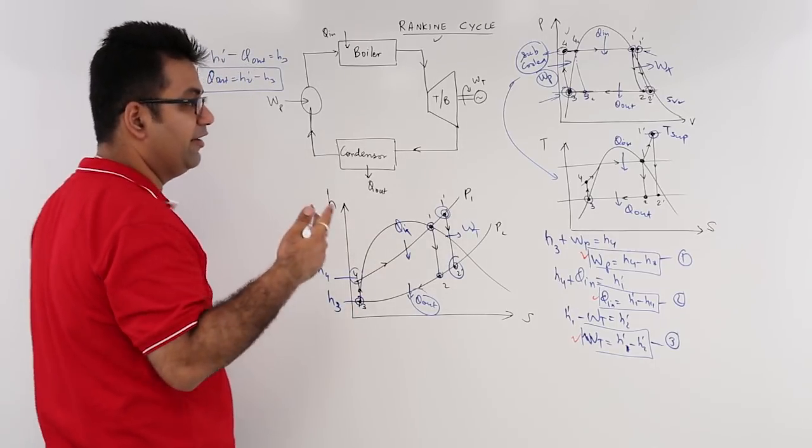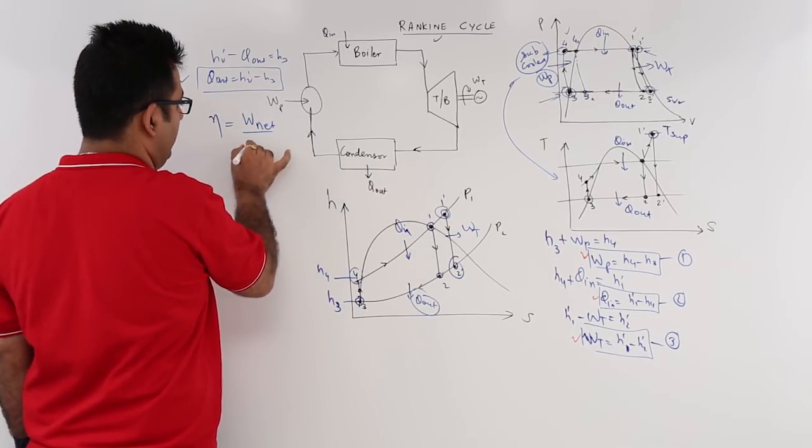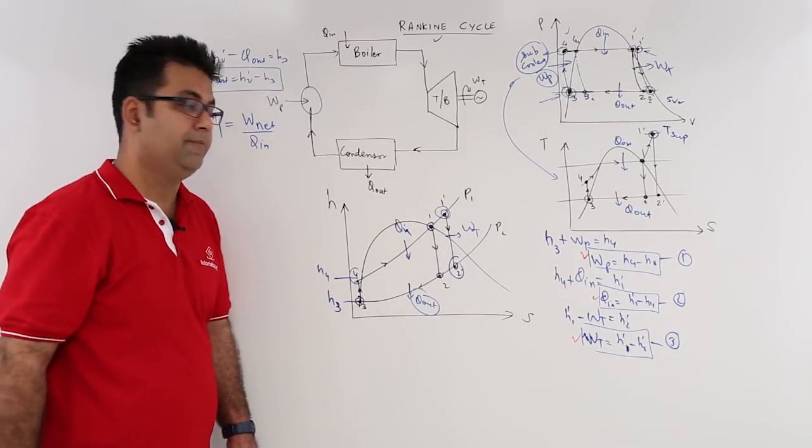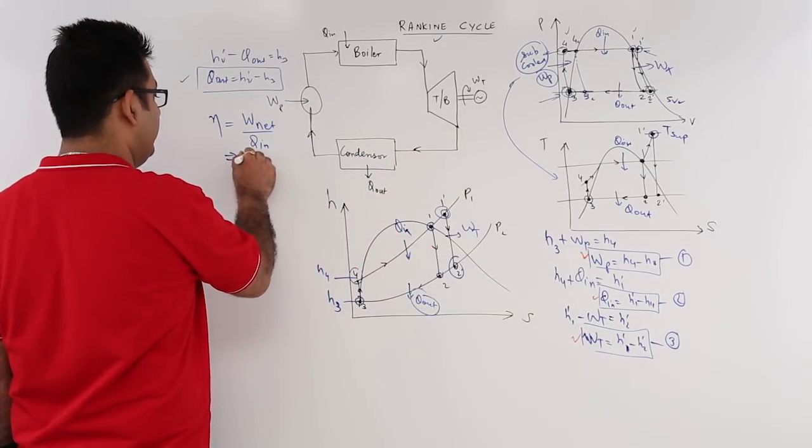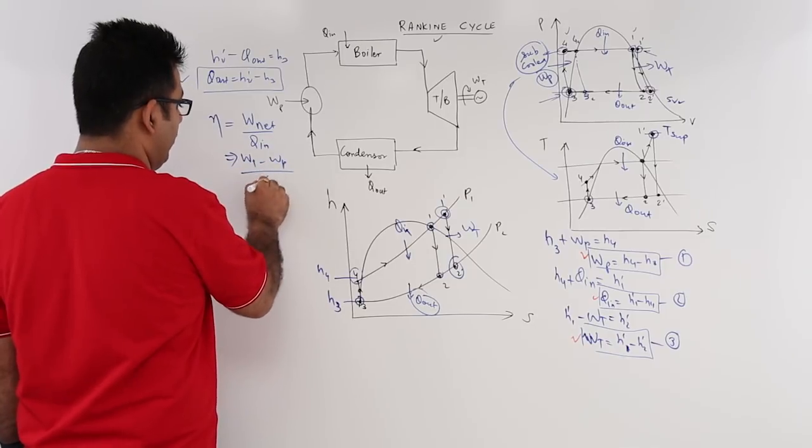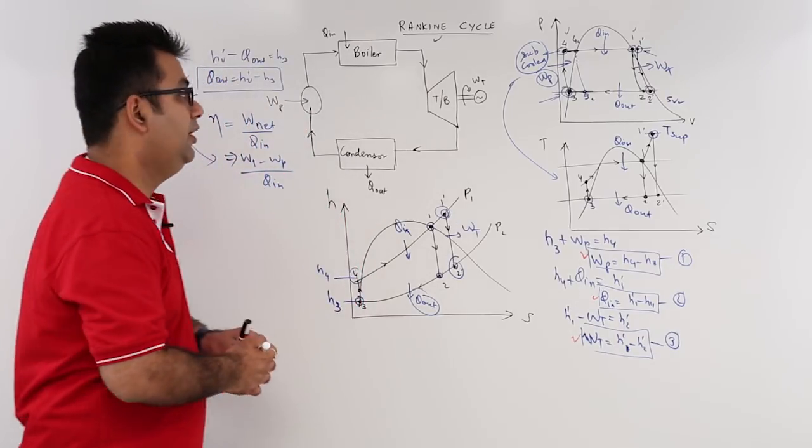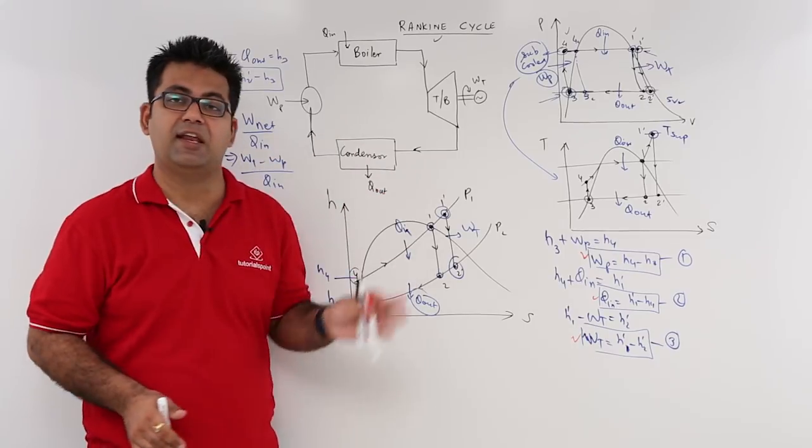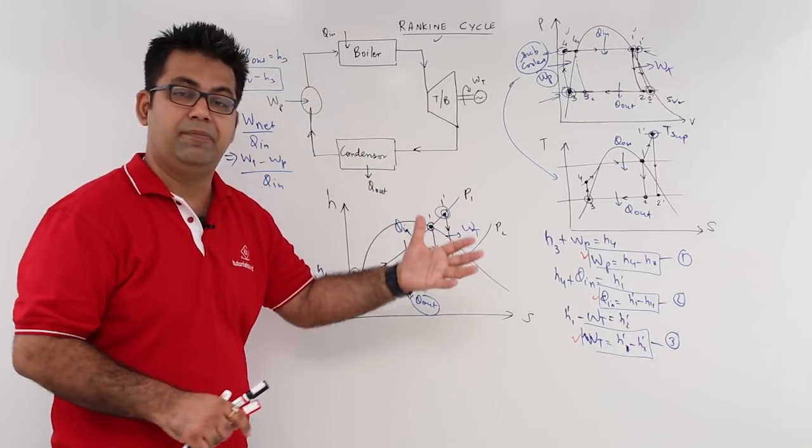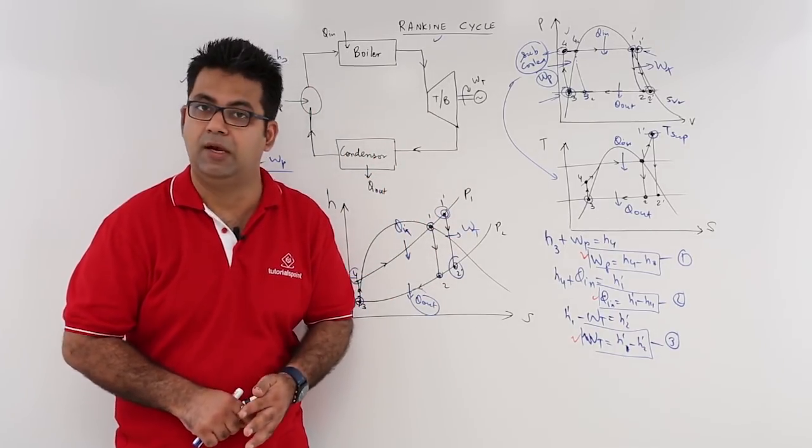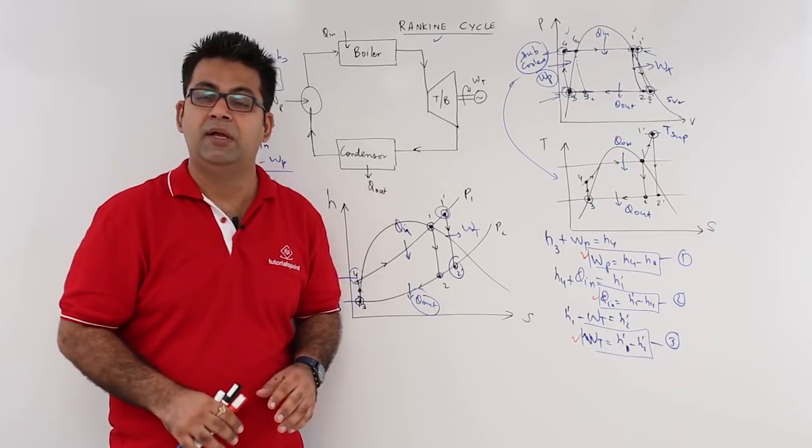So if you have to find out the efficiency of the Rankine cycle, then net work output upon heat input. Net work output we know it is WT minus WP, WT minus WP upon Q in. So just put in these values and you will get your answer for the efficiency of the Rankine cycle. So this is what the Rankine cycle is, which is almost similar to Carnot cycle, except it is taking care of the practicalities of running a WP cycle. So this finishes this video on Rankine cycle. Now in the next video we will talk about the reheat cycle.